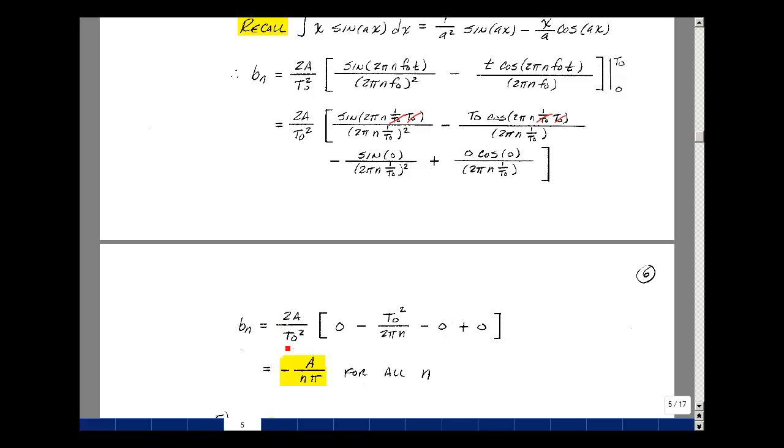And so combining our terms, we have 2a over t0 squared, times the minus t0 squared over 2 pi n. The t0 squares cancel. The twos cancel. And I'm left with minus a over n pi for all n.